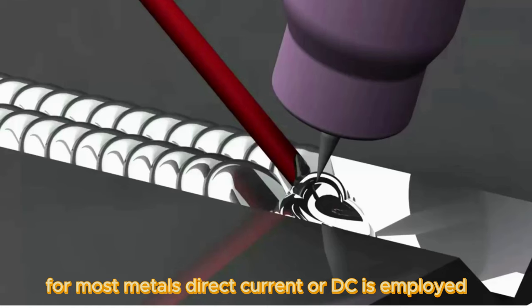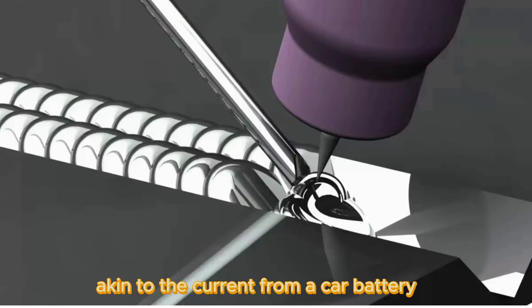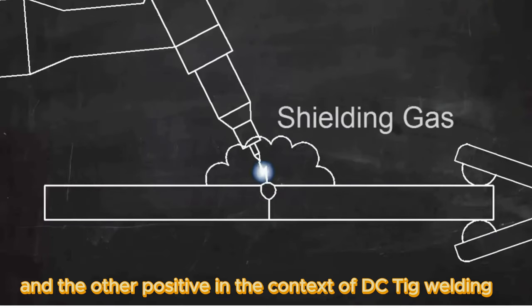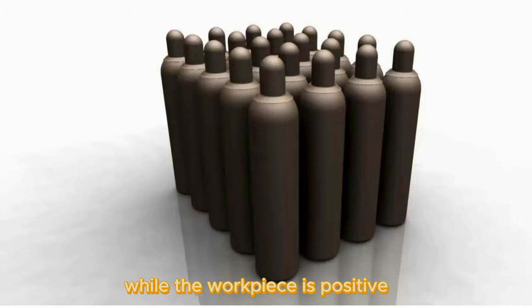For most metals, direct current or DC is employed, akin to the current from a car battery, where one wire is consistently negative and the other positive. In the context of DC TIG welding, the electrode is usually negative while the workpiece is positive.